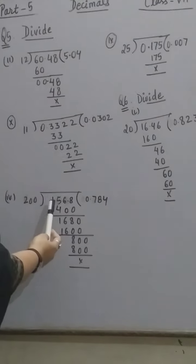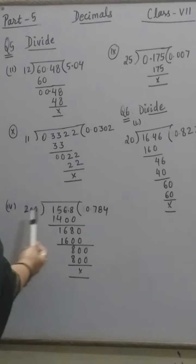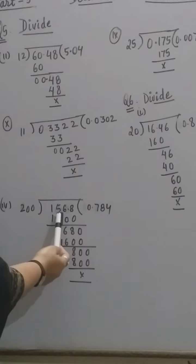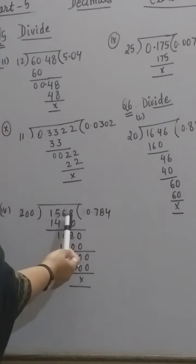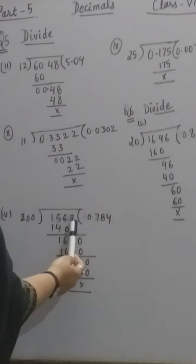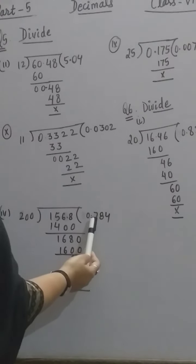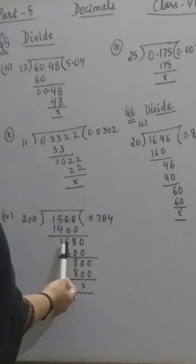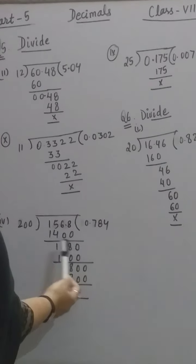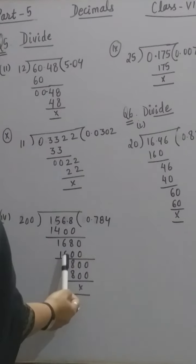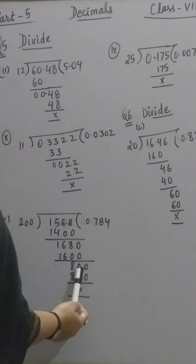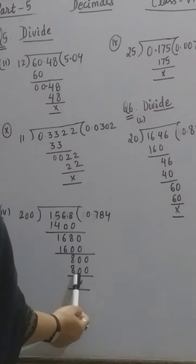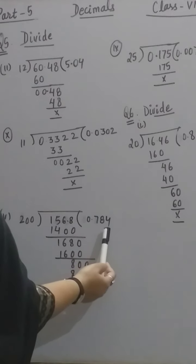4th part: we have to divide 156.8 by 200. The whole number part is 156; 156 is less than 200, so 8 is also going to participate in the division. We place 0 in the quotient. 200 sevens are 1400; we are left with 1680. We place one more 0. 200 eights are 1600; we are left with 80. Place another 0. 200 fours are 800. So our answer is 0.784.